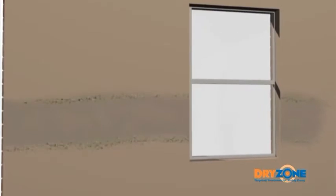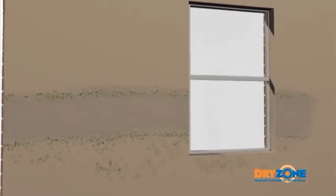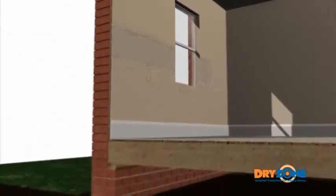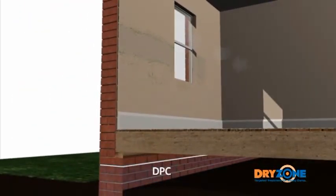As the moisture evaporates internally, soluble salts are left behind and over time these crystallise to form a visible salt band towards the maximum height the moisture rises. Even if a damp-proof course is then installed, this salt concentration will continue to absorb moisture from the surrounding environment and cause the wall to remain damp.